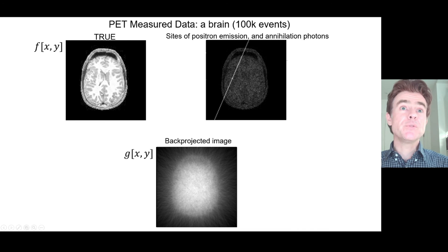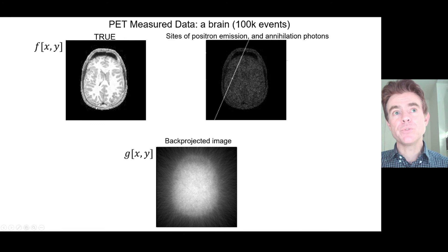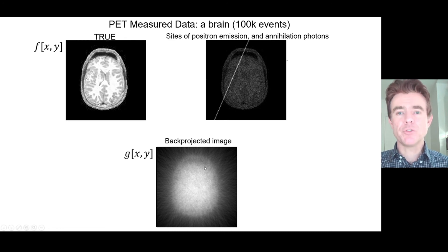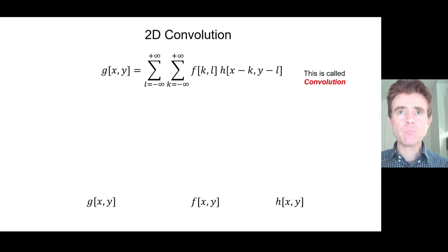With an even more complicated distribution — such as a slice through a brain — this is still a collection of point sources of different amplitudes, whereby each point source of a given amplitude has been replaced by its point spread function of corresponding amplitude in the back-projected image. With 100,000 events, you can still see the lines, but with millions of events this would be quite a smooth function. So what is that mathematically?